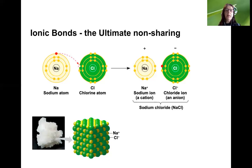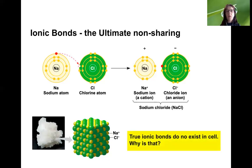Ionic bonds are quite strong because of this attraction. In nature they form crystal lattices, so table salt really is a crystal of two oppositely charged ions arranged precisely. True ionic bonds are very strong — much stronger than covalent bonds — but they do not exist in a cell. I want you to think about why that is, and we're going to get back to this question later in the videos.